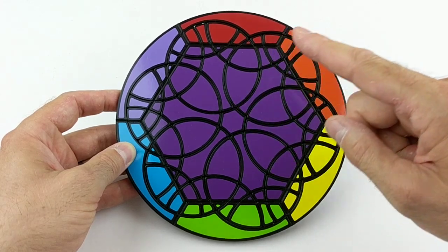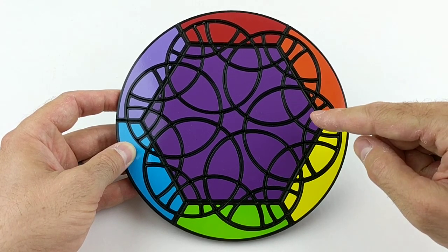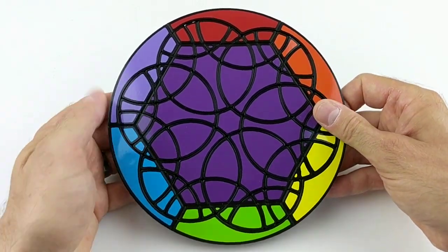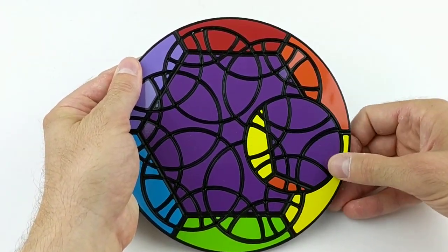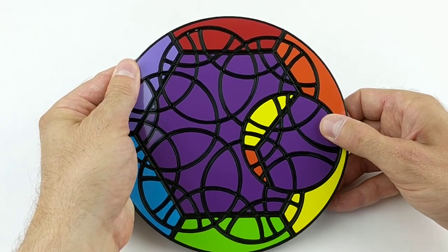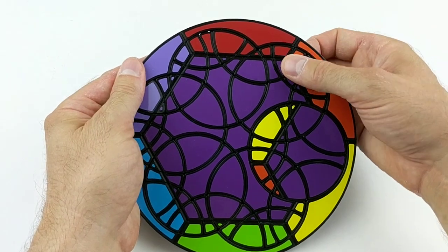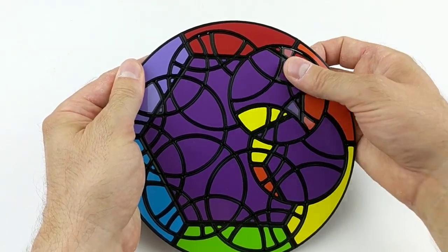As you can see, the puzzle is centered around a hexagon, and there's an axis of rotation at each corner of the hexagon. These axes can turn in increments of 60 degrees, and then other axes can turn if they're not blocked.